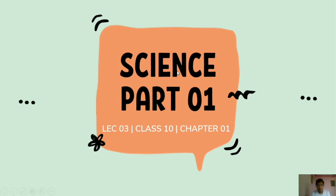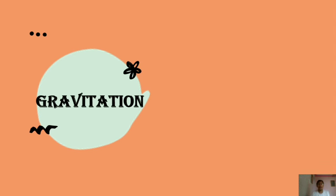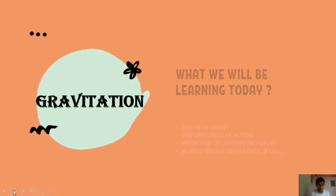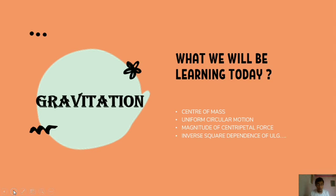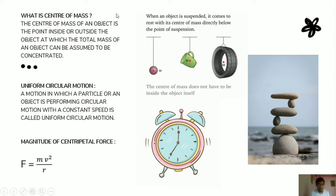Hello and welcome everyone for lecture number 3 of class 10 science. We have started our chapter on gravitation and studied about gravitation, the universal law of gravitation by Sir Isaac Newton, and also Kepler's laws of planetary motion. In this lecture we are going to see what is meant by center of mass, what is uniform circular motion, the magnitude of centripetal force, and why Newton took the inverse of the square of the distance in his universal law of gravitation.